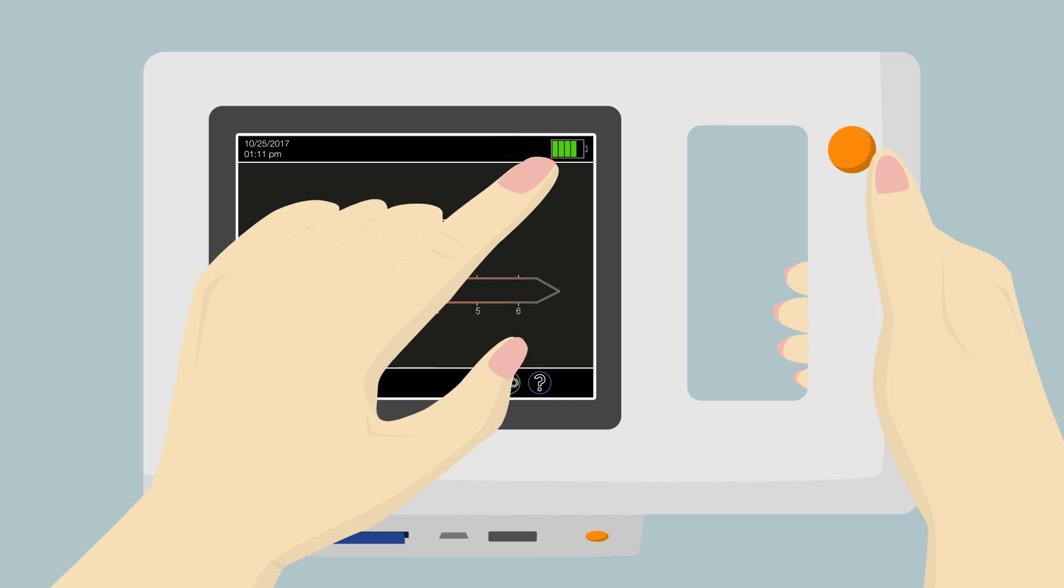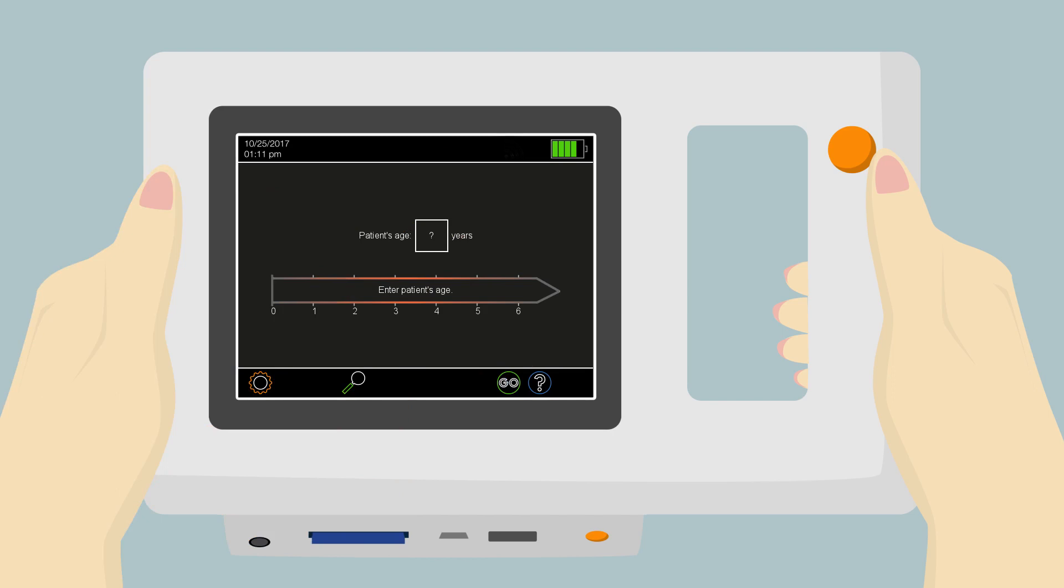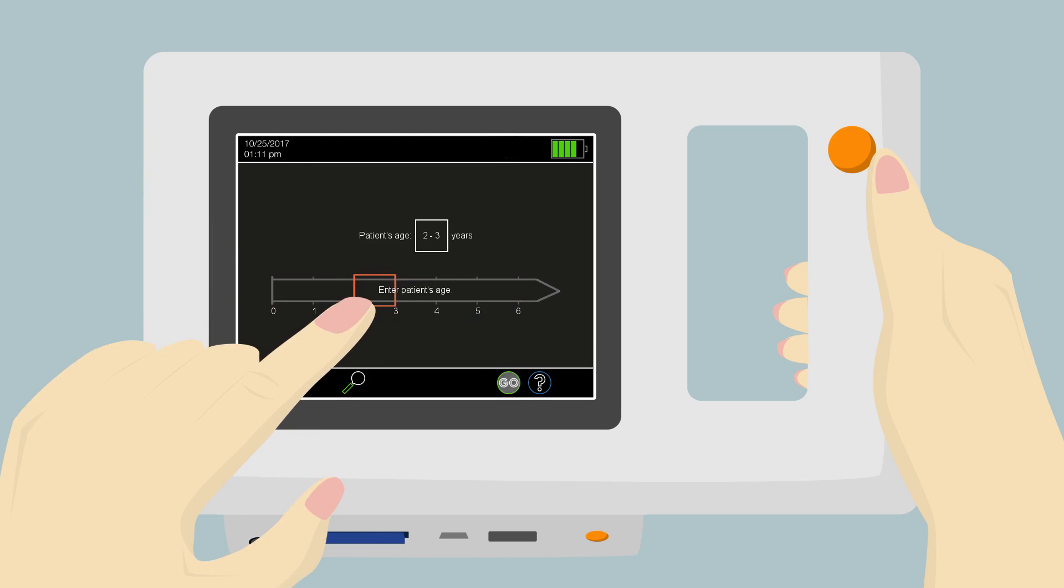She is now ready to start the measurement. This is the home page. If Anna does not see this page, she simply presses the shutter button on the handle once. The referral criteria are age-based, so it is important to select the correct age of the patient by touching the corresponding section on the timeline. Look for the Go button in the navigation bar. If it is blinking, a new measurement can be started.